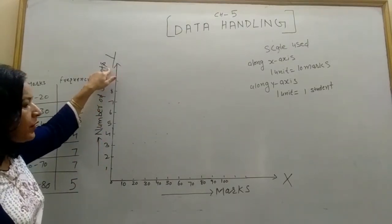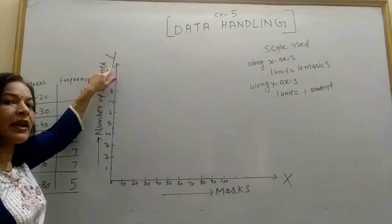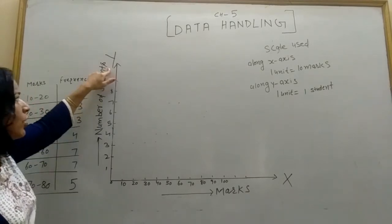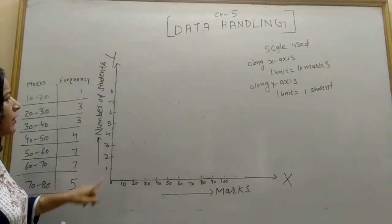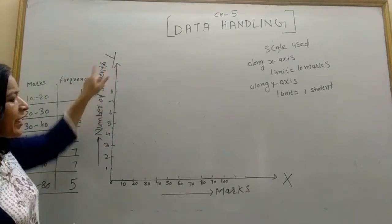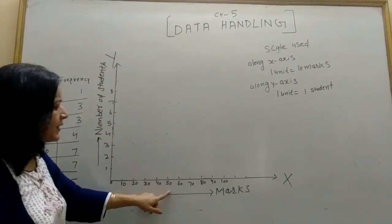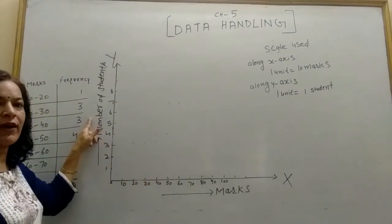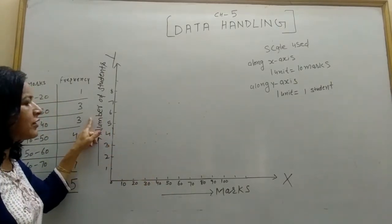So here, we will use two scales. In bar graph, we used only one scale because numbers were only on the y-axis. But here, the numbers are on both x-axis and y-axis, so we will use two scales.